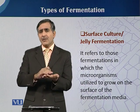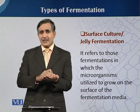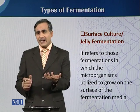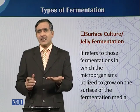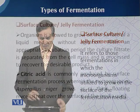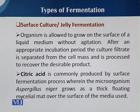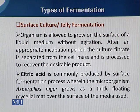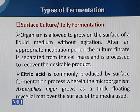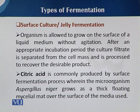A very suitable example is growing an organism on an agar plate — when you solidify the agar, its appearance is jelly-like. In surface culture or jelly fermentation, the organism is allowed to grow on the surface of the liquid medium without agitation. After an appropriate incubation period, the culture filtrate is separated from the cell mass and processed to recover the desirable product. A common example is citric acid, which is commonly produced by this type of fermentation in which the mycelia remain floating on the medium.